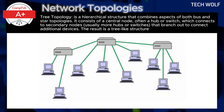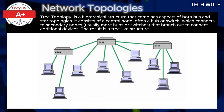Tree topology is highly scalable, making it suitable for large networks that need to expand over time. Fault isolation is also easier, as issues in one branch don't necessarily affect the entire network. However, the central hub and upper-level hubs play a critical role, so if one of them fails, it can isolate parts of the network, reducing overall connectivity.